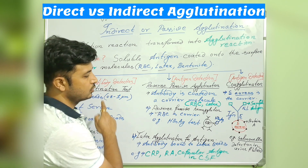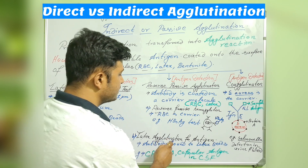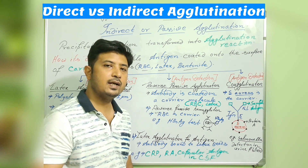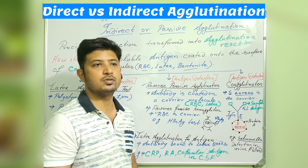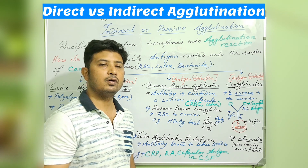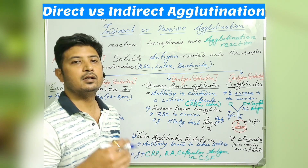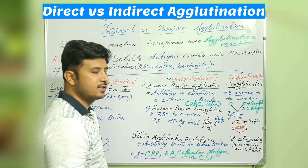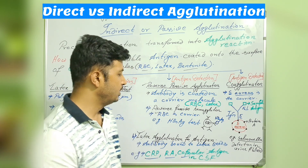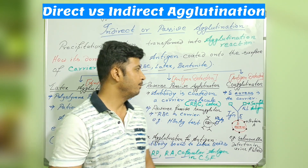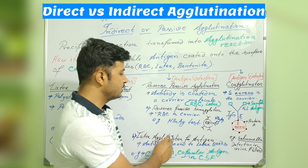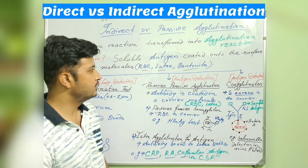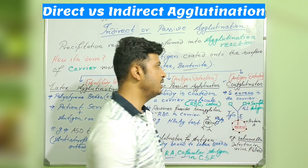In the latex agglutination for antigen, the antibody is bound to the latex beads, and this is used for antigen detection — don't confuse this with the earlier latex agglutination used for antibody detection. Examples include CRP, RA, and capsular antigens in CSF — these are common tests performed regularly in labs, all using the principle of latex agglutination for antigen under reverse passive agglutination.